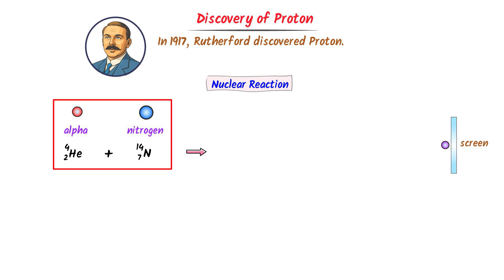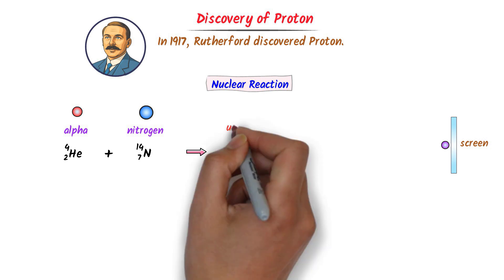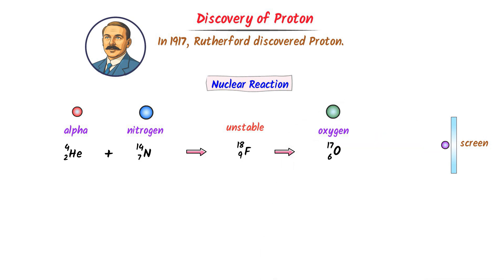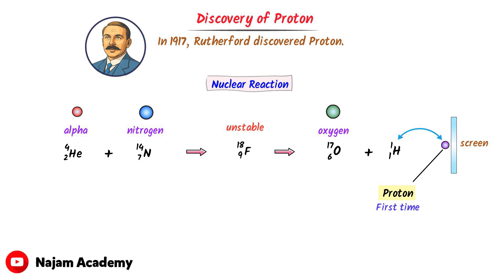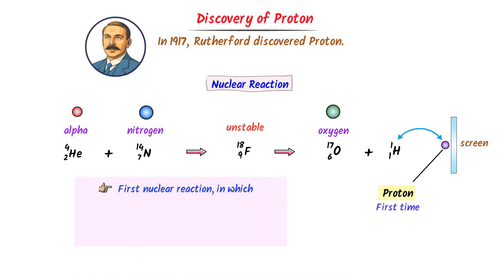When alpha particles collided with a nitrogen nucleus, the nitrogen nucleus absorbed the alpha particle for a short period of time and formed an excited fluorine nucleus. This fluorine nucleus is highly unstable and decays into oxygen-17 and a hydrogen nucleus. From this experiment, Rutherford concluded that this high-speed particle which collided with the screen is a hydrogen nucleus, and he called this hydrogen nucleus a proton. This was the first time a nuclear reaction produced a proton, proving that the proton is a fundamental particle inside the nucleus. This was also the first nuclear reaction in which Rutherford artificially converted one atom into another — nitrogen into oxygen-17.